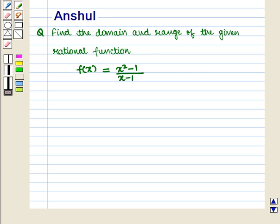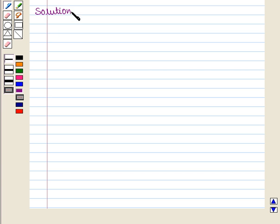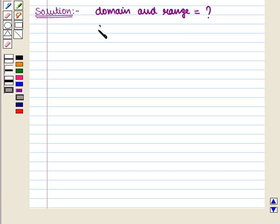In this session we are going to discuss the following question: Find the domain and range of the given rational function f(x) = (x² - 1) / (x - 1). Let us start with the solution of the given question. In this question we have to find the domain and range of the function f(x) = (x² - 1) / (x - 1).